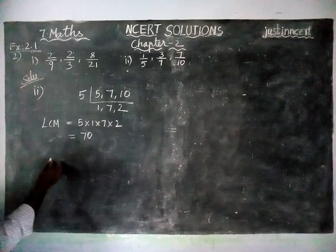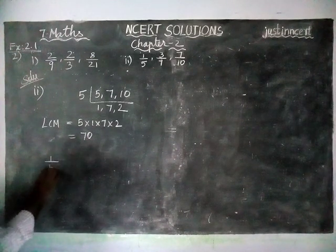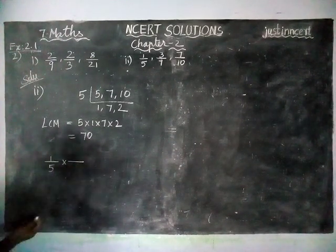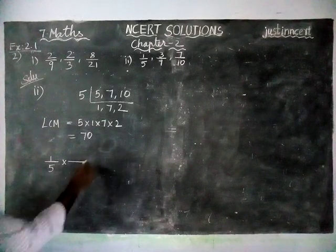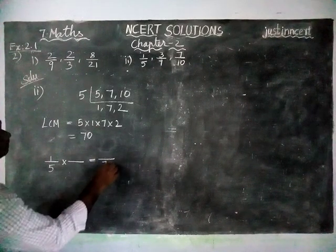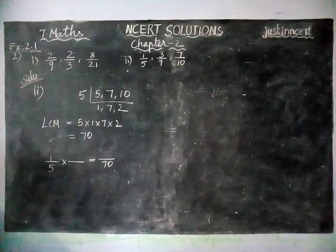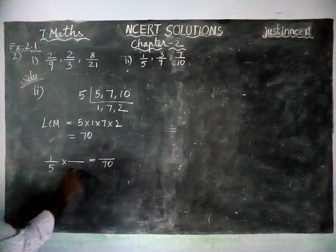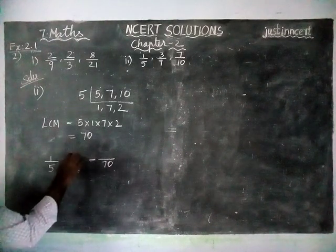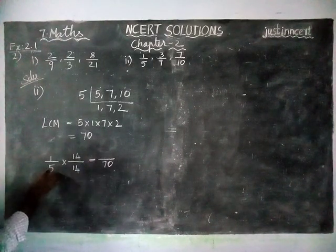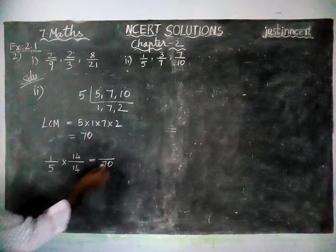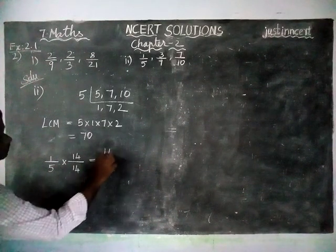1 by 5 into, if you are multiplying by what number we will get 70? 14. 5 times 14 is 70, 1 times 14 is 14.